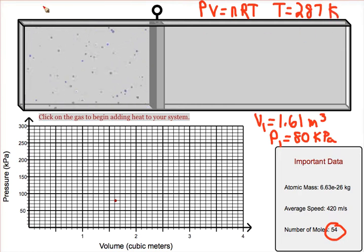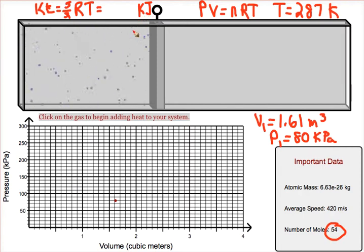We can then find the kinetic energy of the molecules inside the chamber by using the formula: the kinetic energy of a mole of particles at a certain temperature is equal to 3 halves RT. Once you get that, multiply by 54 since we have 54 moles. Your answer will be very large, so I would give that answer in kilojoules, and in this case it's 193 kilojoules. This is the kinetic energy before we add any heat.